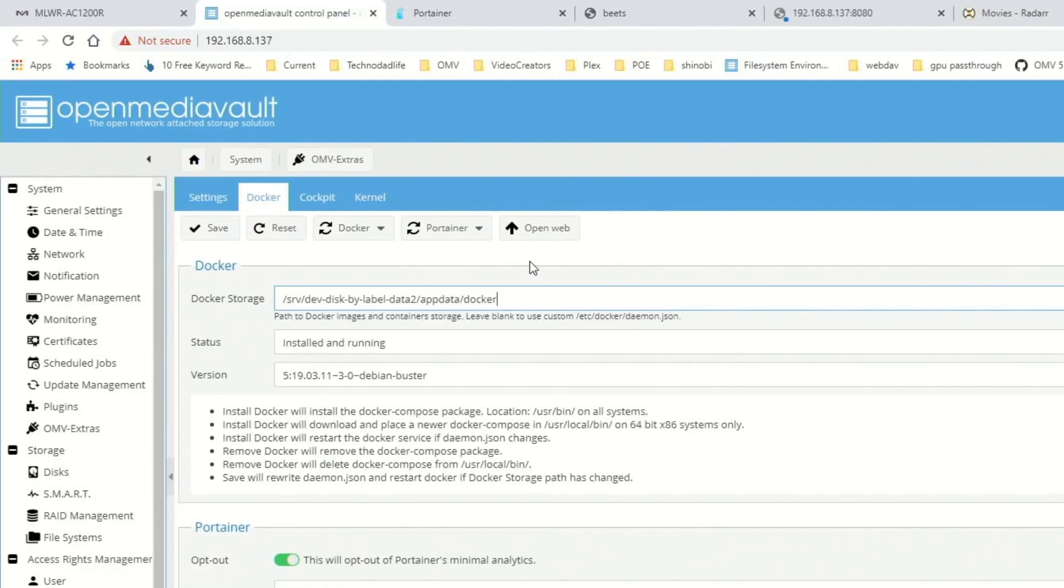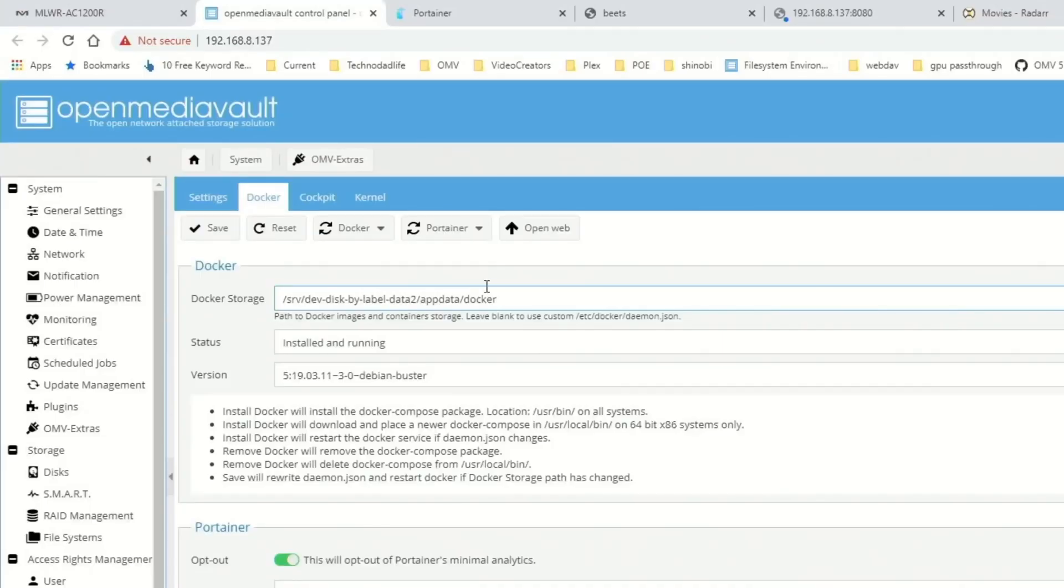And so what this will do is create a Docker folder in our AppData folder. So from now on, all our Dockers will be saved on our Media Disk rather than our OS Disk.